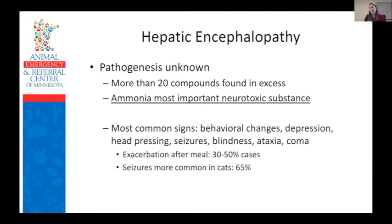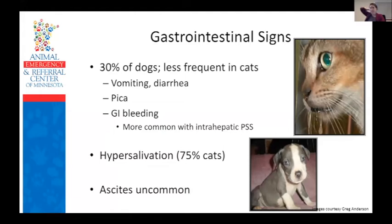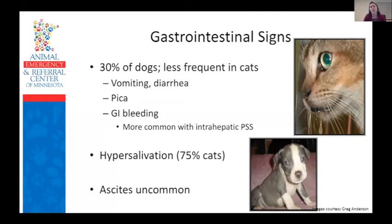Clinical signs from excess ammonia and other toxic substances include behavioral changes, depression, disorientation, seizures, blindness, ataxia, and coma. Seizures seem to be much more common in cats — reported in over 65% of cats with portosystemic shunts. GI signs include vomiting, diarrhea, pica, and evidence of GI bleeding such as melena or hematemesis, occurring in approximately 30% of dogs. Hypersalivation is extremely common in cats, seen in about 75%, and is thought to be a manifestation of hepatic encephalopathy or GI upset. Ascites is actually very uncommon with congenital portosystemic shunts — it's usually an indication of multiple acquired shunts or hepatic AV malformation.